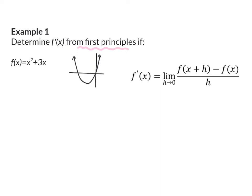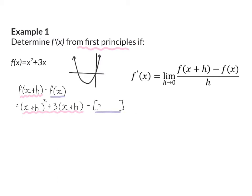Just like in the example in the previous lesson, I'm going to start off only calculating the numerator. I'm going to take my function which is x squared plus 3x and instead of x I'm going to substitute it with x plus h. So everywhere there was an x I'm going to have x plus h. And from this I'm now going to subtract the original function, and f(x) was x squared plus 3x.